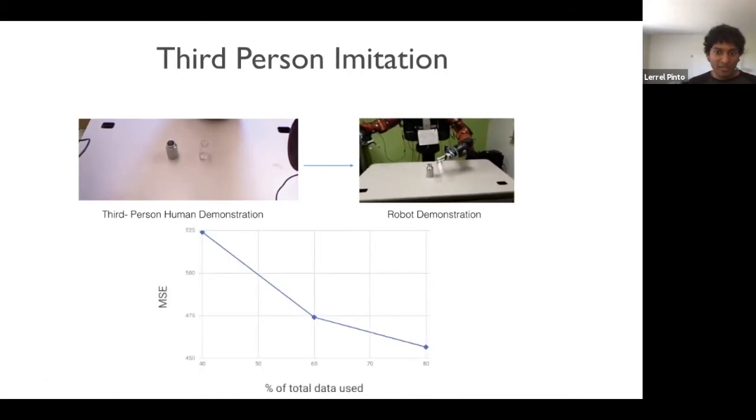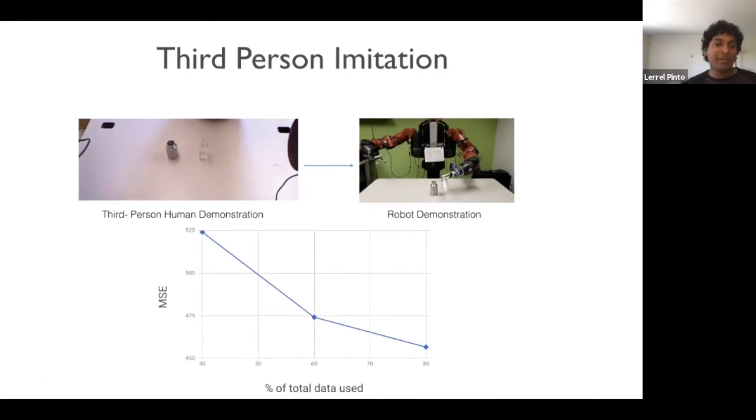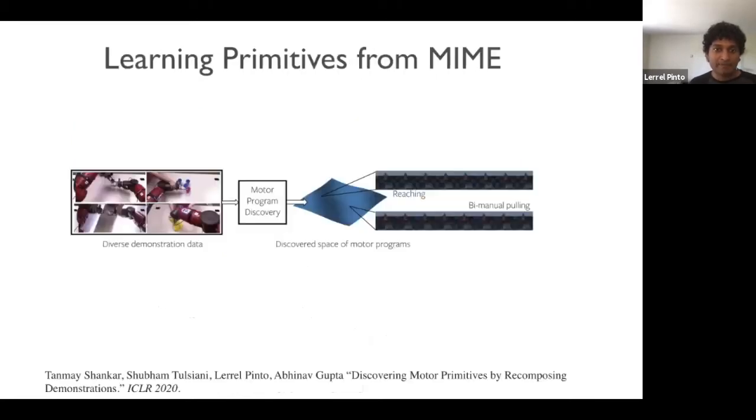So again, over here, we look at what happens if you change the amount of total data that's been used. And when you use 40% of data, we have a mean squared error of 525. However, when you increase the data by two times to 80% of the data, the error rates significantly come down to 450 MSE.